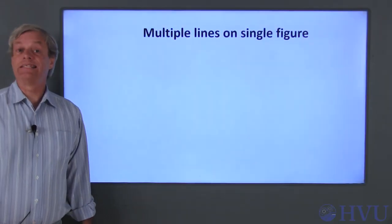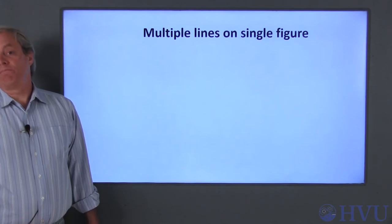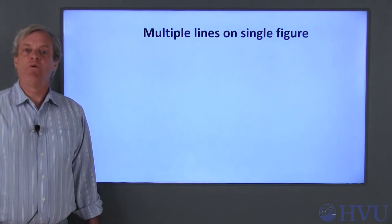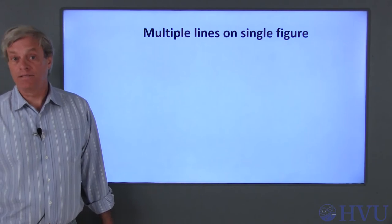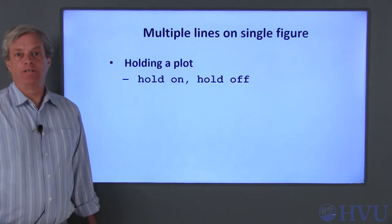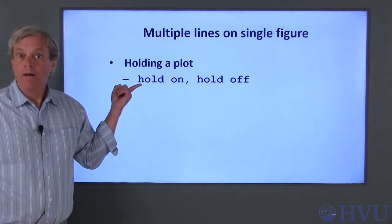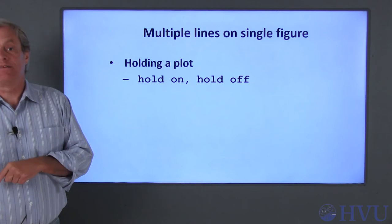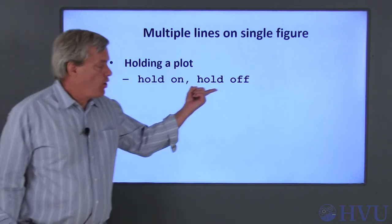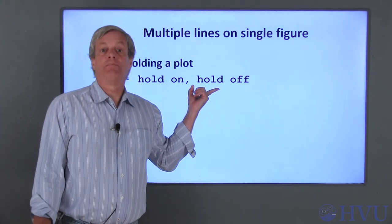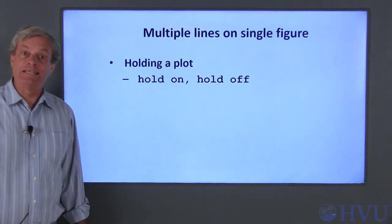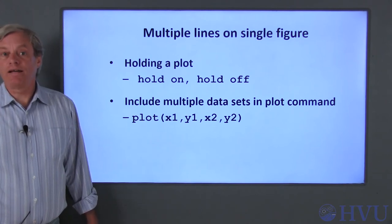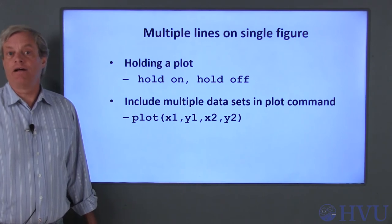Now let's talk about putting multiple lines on a single plot. We've already seen that applying the plot function a second time replaces the data. However, there are a couple of easy ways to get multiple sets of data on the same plot. If you have an existing plot on the active figure window, type 'hold on' to hold the figure — plot commands after hold on will add data to the existing figure rather than replacing it. Typing 'hold off' releases the figure. Or you can use a single plot command, listing the x and y data for each plot in pairs.